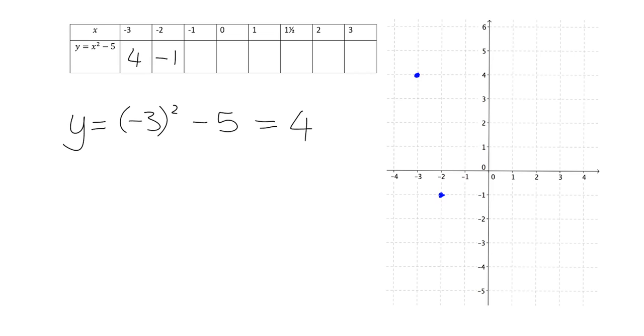The next one, x is negative 1, we're going to get negative 1 times negative 1, which is 1, 1 minus 5 gives me negative 4. So into the table, I will put negative 4. And so what I have here is I need to plot on my graph this point here, which shows that when I've got an x value of negative 1, the y value is negative 4.